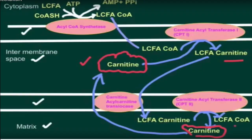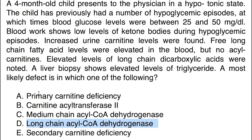Before getting into the details, you can take a look at my video on the carnitine shuttle mechanism for better background understanding. Now, let's look at choice A — primary carnitine deficiency. Primary carnitine deficiency is due to a mutation in a protein called SLC22A5, which is a carnitine transporter that helps in the uptake of carnitine by tissues.